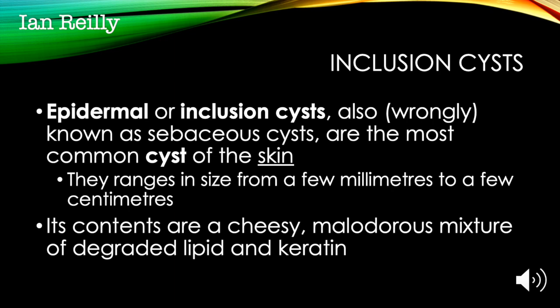Epidermal or inclusion cysts, also known as epidermoid cysts, are also known as sebaceous cysts — but wrongly, because a true sebaceous cyst contains sebum and comes from the pilosebaceous unit. Inclusion or epidermal cysts range in size from just a few millimetres up to a few centimetres, and contain a cheesy, somewhat malodorous mixture of degraded lipid and keratin. One reason I like to think of them as inclusion cysts is that they really are an island of epidermis below the dermal-epidermal junction that continues to divide and produce skin but has nowhere to shed, nowhere to go — so it just builds up underneath the skin.